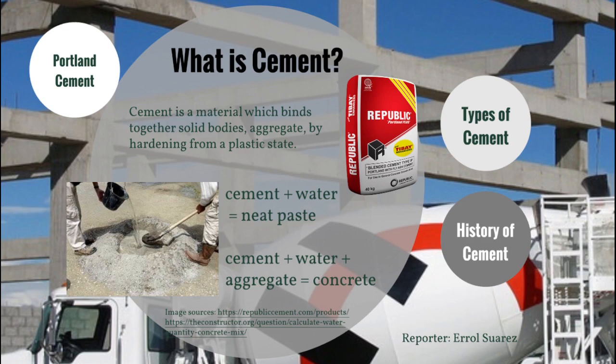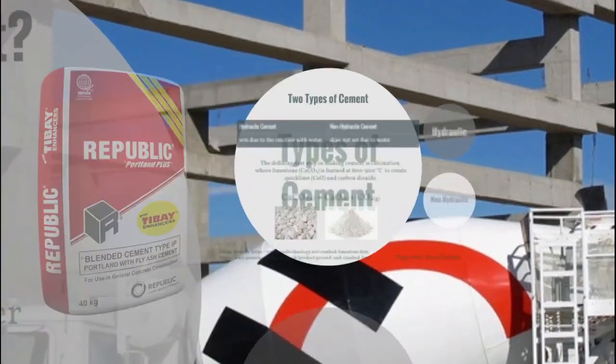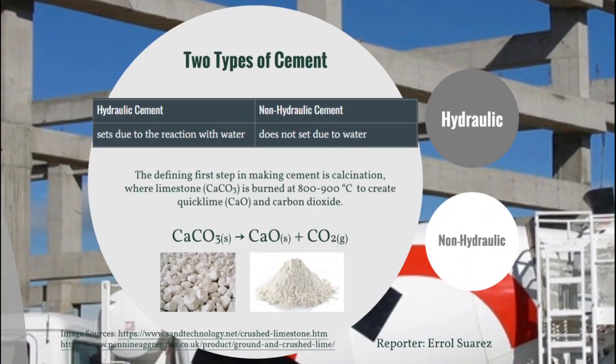This common definition of cement is quite general and tells us nothing about its chemical properties. This could be due to the differences in the two types of cement: hydraulic and non-hydraulic. Cement is hydraulic if it sets due to the reaction with water. Non-hydraulic cement is often still mixed with water, but the water is not what causes it to set. Regardless, for both types, the first step in production is calcination.